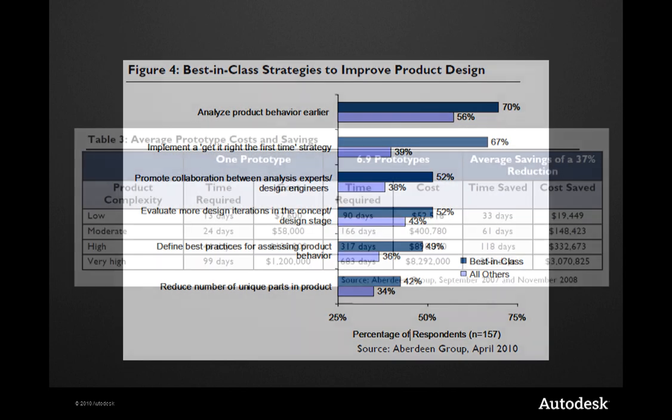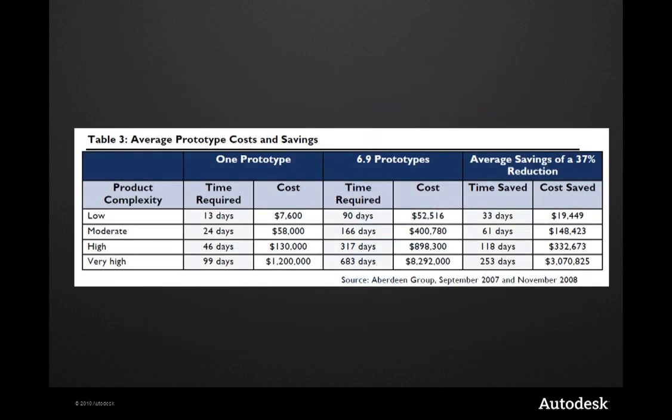Building and testing too many physical prototypes can adversely impact time to market and cost. A recent Aberdeen report found that the industry average is 6.9 prototypes per design. So think about this: How many prototypes do you build? When in the design process are the prototypes constructed and tested? And how much can you change the design based on the results of those prototypes?